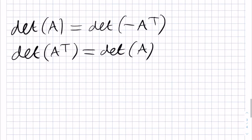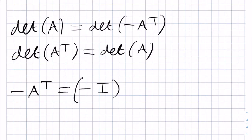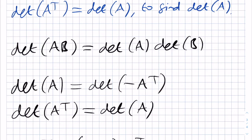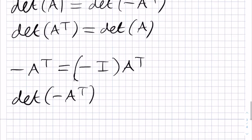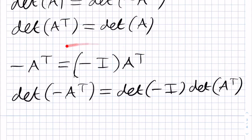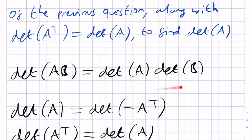Notice that minus A transpose is equal to minus the identity matrix multiplied by A transpose, where I is the n by n identity matrix. Hence, from the result of the product of determinants, we have that det of minus A transpose is equal to det of minus I times det of A transpose.